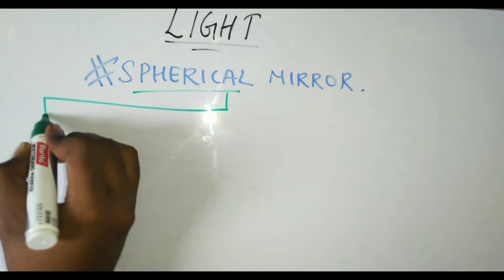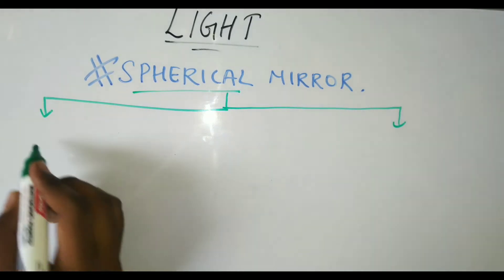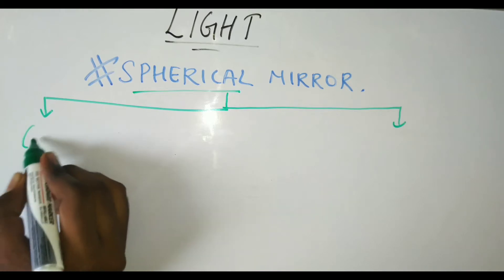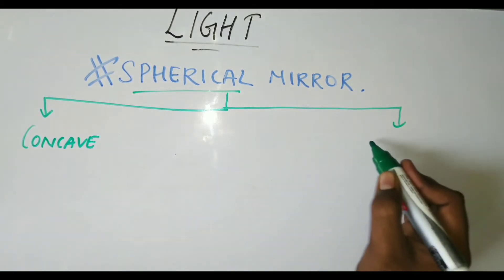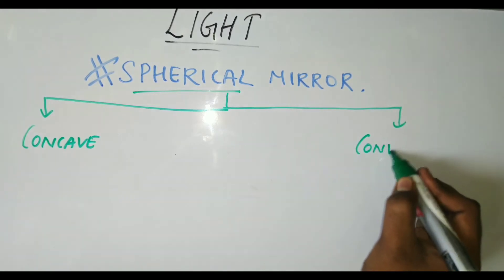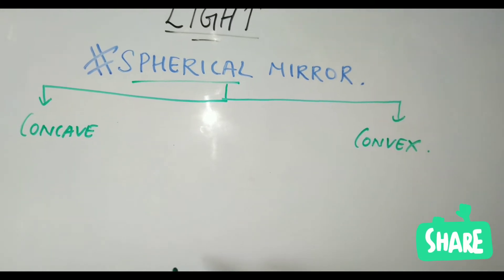One is concave and the other is convex. These are also mirrors, so what is the difference between the plane mirror and the spherical mirror? Plane mirror, you can observe that plane mirror - suppose this is a plane mirror.